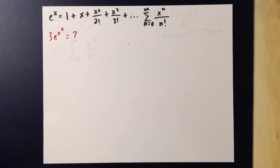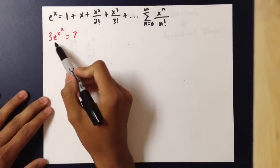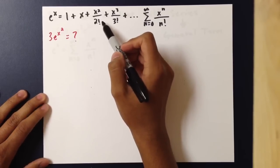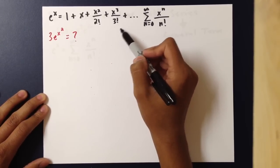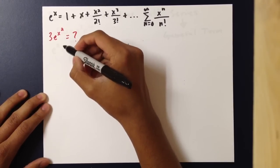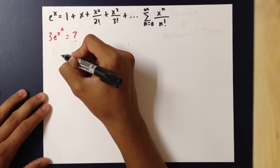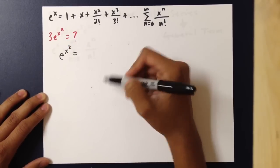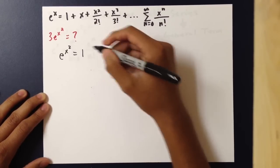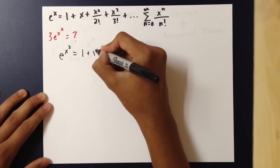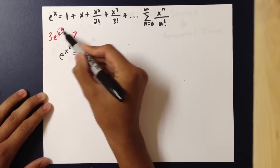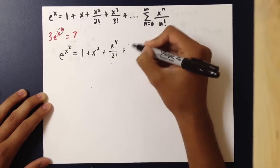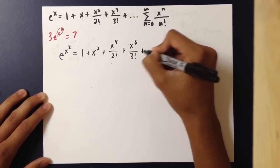Now let's try a different, slightly more complicated example with 3e to the x squared. Knowing that e to the x is 1 plus x plus x squared over 2 factorial, plus x cubed over 3 factorial, and so on, we simply write e to the x squared and replace each x with x squared. The 1 stays the same, the x becomes x squared, the x squared over 2 factorial becomes x to the fourth over 2 factorial, and x cubed over 3 factorial becomes x to the sixth over 3 factorial, and so on.